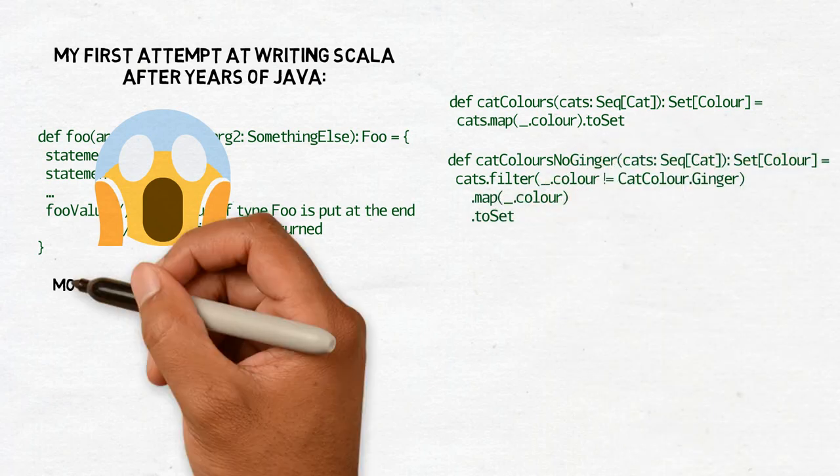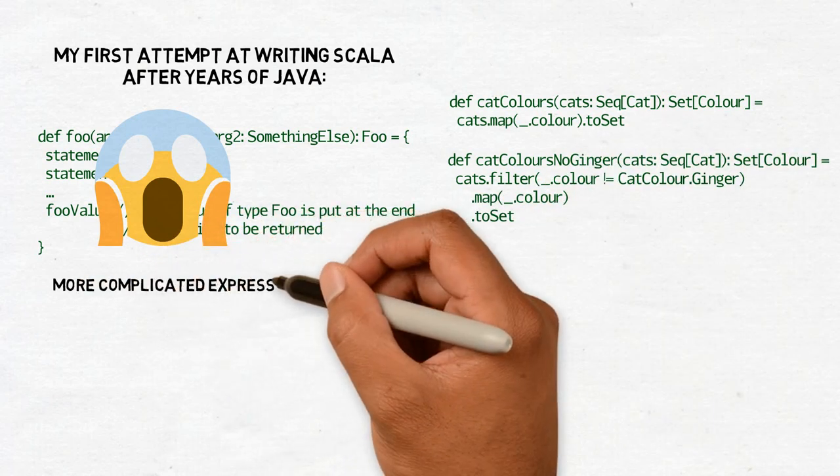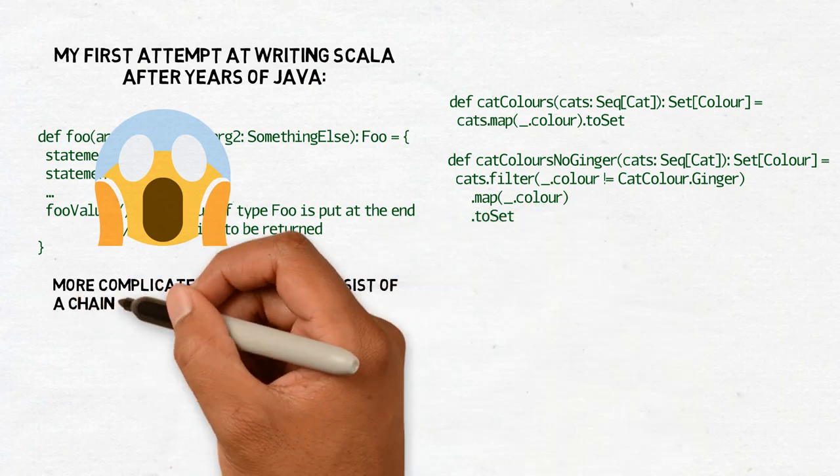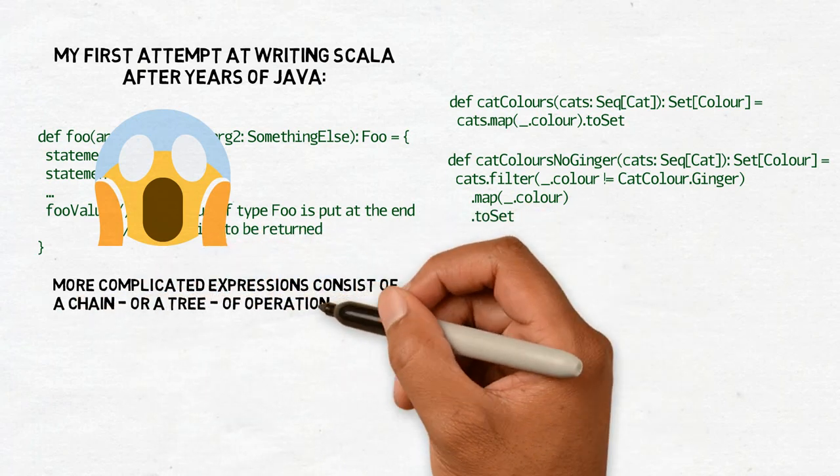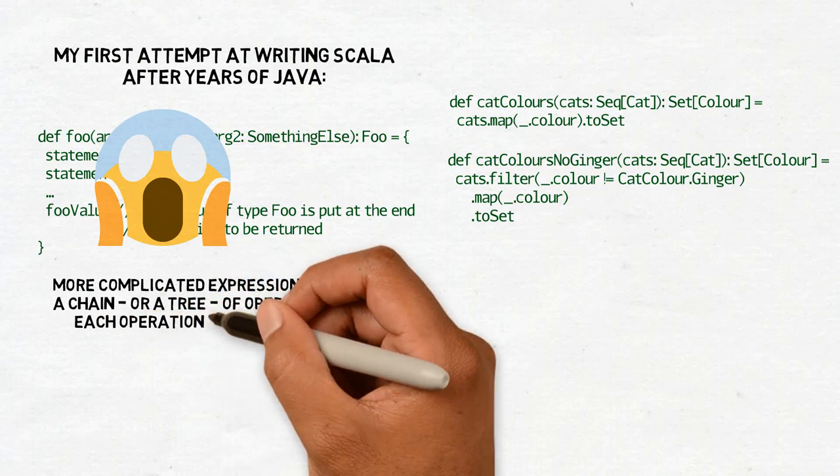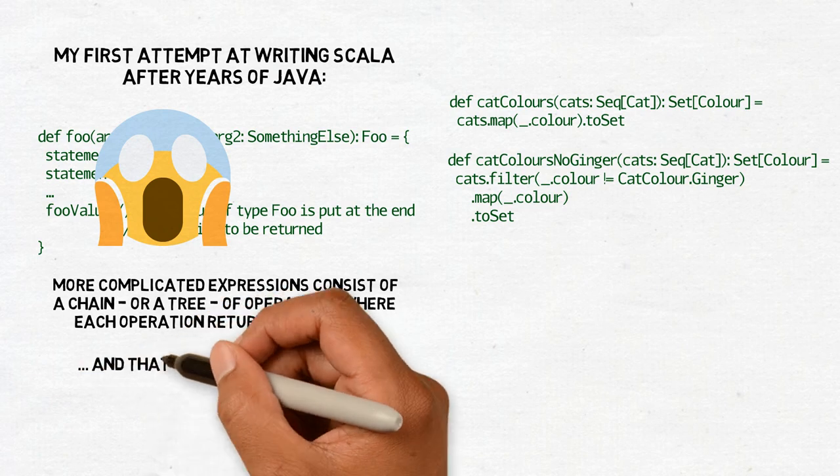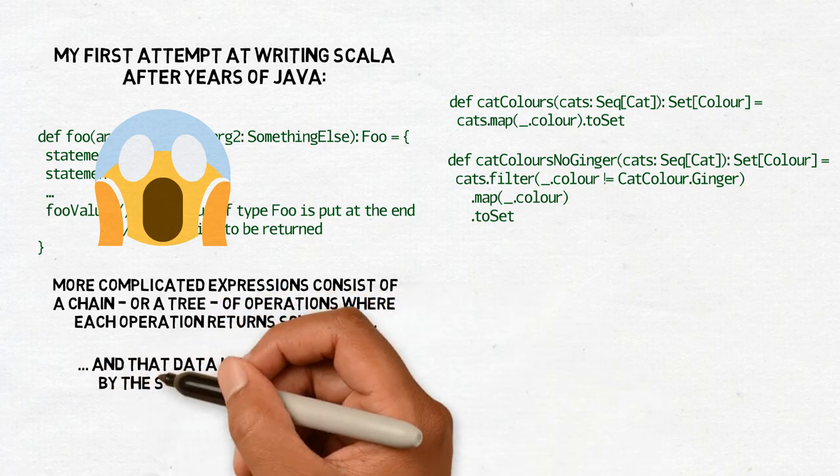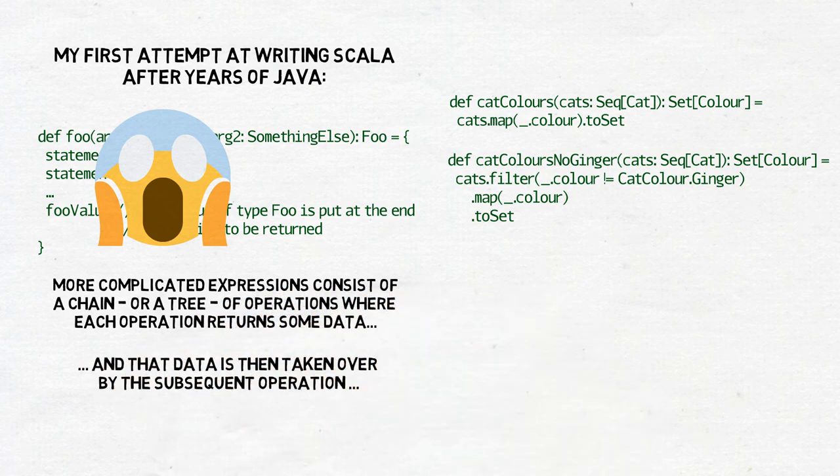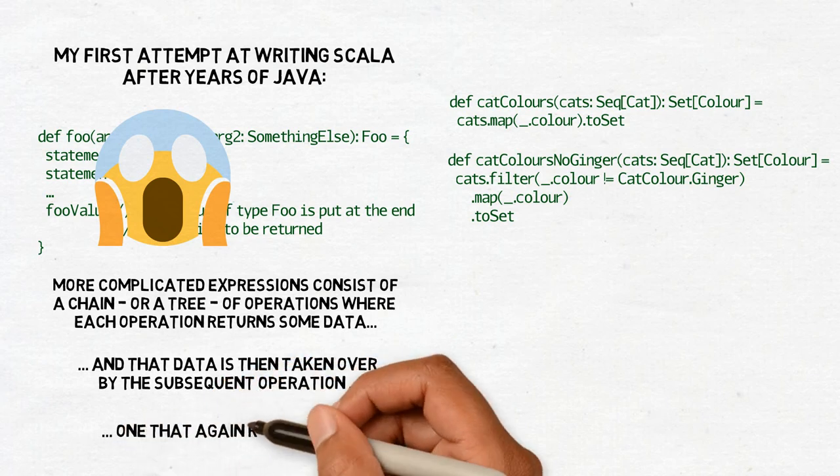Expressions can be much more complicated than that, but you should get the feeling. They consist of a chain or a tree of operations, where each operation returns some data, quite possibly because it's an expression as well, and that data is then taken over by the subsequent operation, one that again returns data, and so on, and so on.